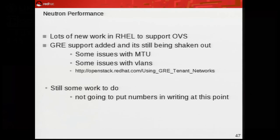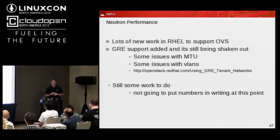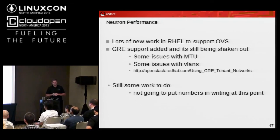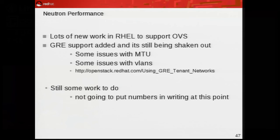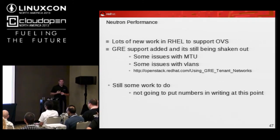Neutron performance: a lot of new work in the RHEL products to support OVS. One of the drawbacks of having a stable RHEL product is that new features don't get added right away, but they've been backporting GRE and other OVS stuff needed for OVS namespaces into RHEL 6.5. There are still some issues with MTU sizes and performance with GRE and VLANs that are being actively worked on. There's a page on the OpenStack Red Hat RDO page for people who want to look at how to use GRE tenant networks. We're not comfortable putting numbers out right now because we know it's going to change — it should be radically improving around January or February.